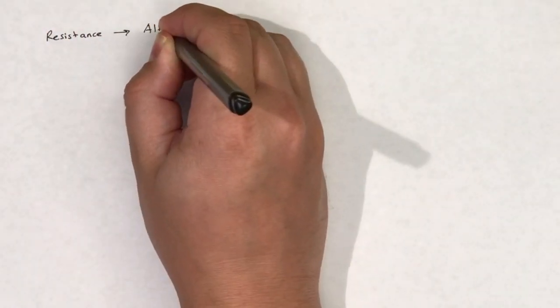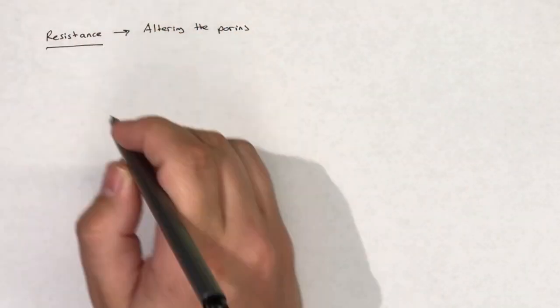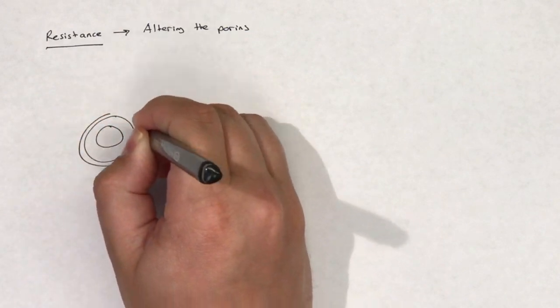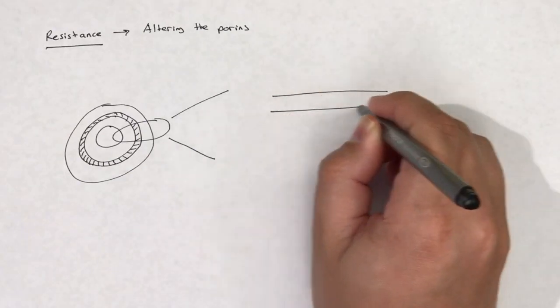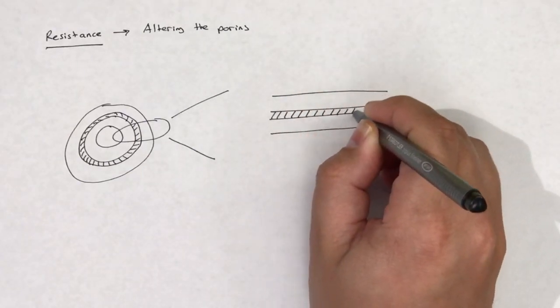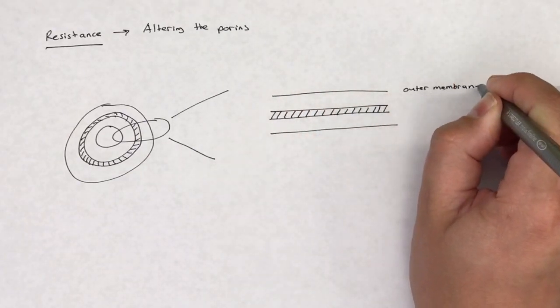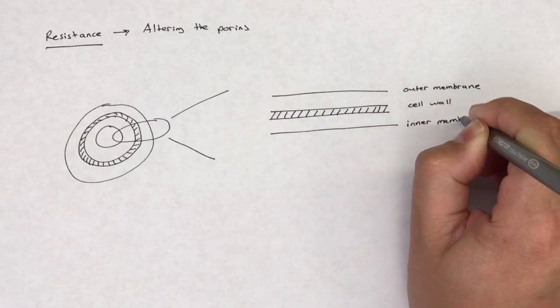Porins are the gateway for cephalosporins to access the cell wall in a gram-negative bacterium. You'll recall that gram-negative bacteria have an outer membrane that surrounds the peptidoglycan cell wall. In order for cephalosporins to penetrate a gram-negative bacterium, they must pass through porins located in the outer membrane.